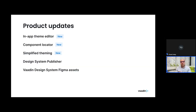Let me start with a brief description of some product updates. Specifically I would like to speak about five different aspects of our recent product roadmap: the theme editor, the component locator, simplified theming, the design system publisher, and the Vaadin design system Figma library.